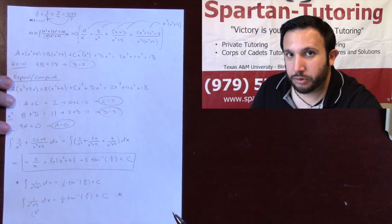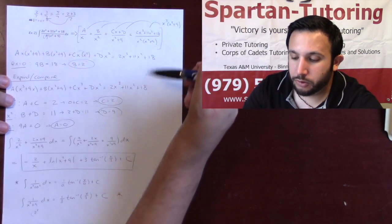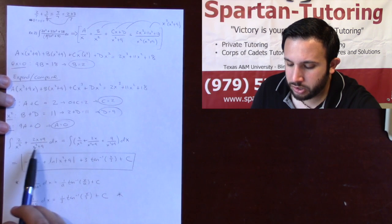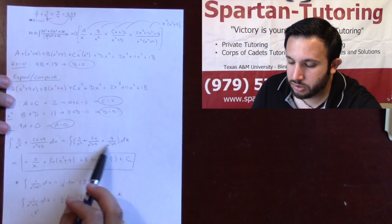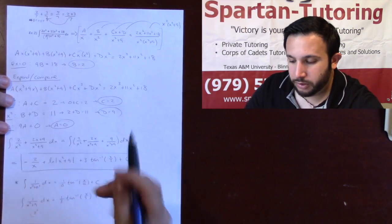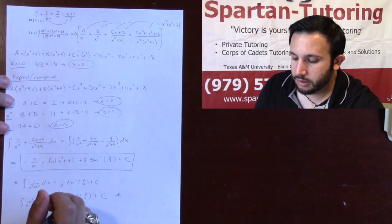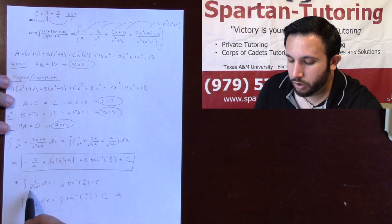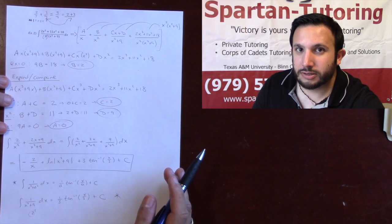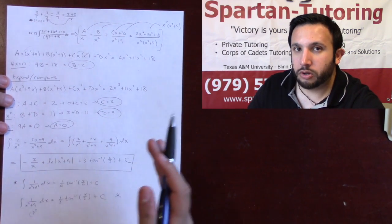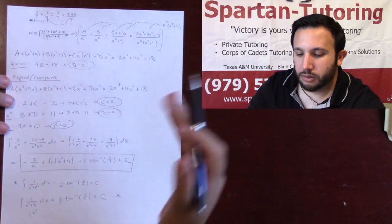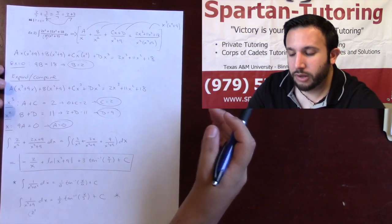This is your standard difficult partial fraction decomposition problem. Remember: if you can't solve for all your letters with freebies, expand and compare. Whenever you have a linear function over x squared plus a squared, always split into two fractions — one will be a u-sub, the other an arctangent. The integral of 1 over x squared plus a squared equals 1 over a times arctangent of x over a plus C. This concludes part 3 of partial fractions. In part 4, I'll show you when and how to do polynomial long division before a partial fraction integral.